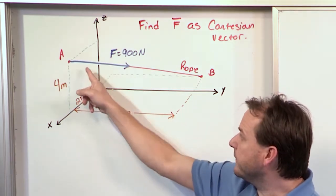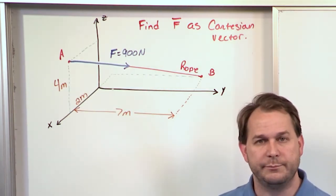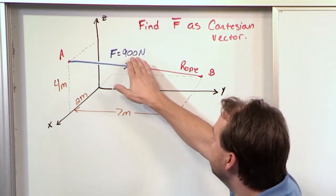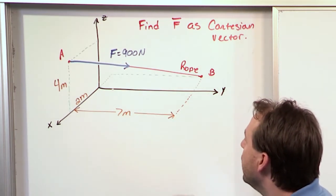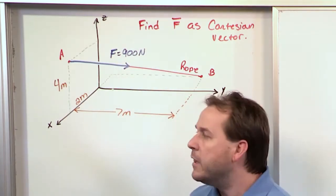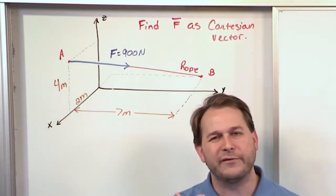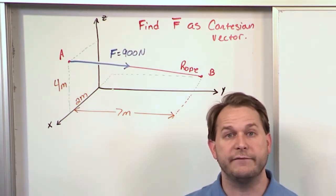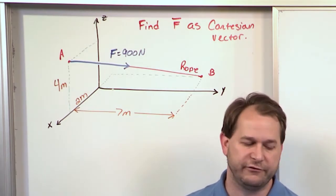So the force is directed along the direction defined by that rope, and we have a direction associated with it because the force is a vector quantity. And we want to figure out what is the vector representation of this force. We know it's 900 Newtons. We know that's the magnitude. We know it goes from A to B, but in terms of I, J, and K, the X component, the Y component, and the Z component of this force, how do we write it as a Cartesian vector?